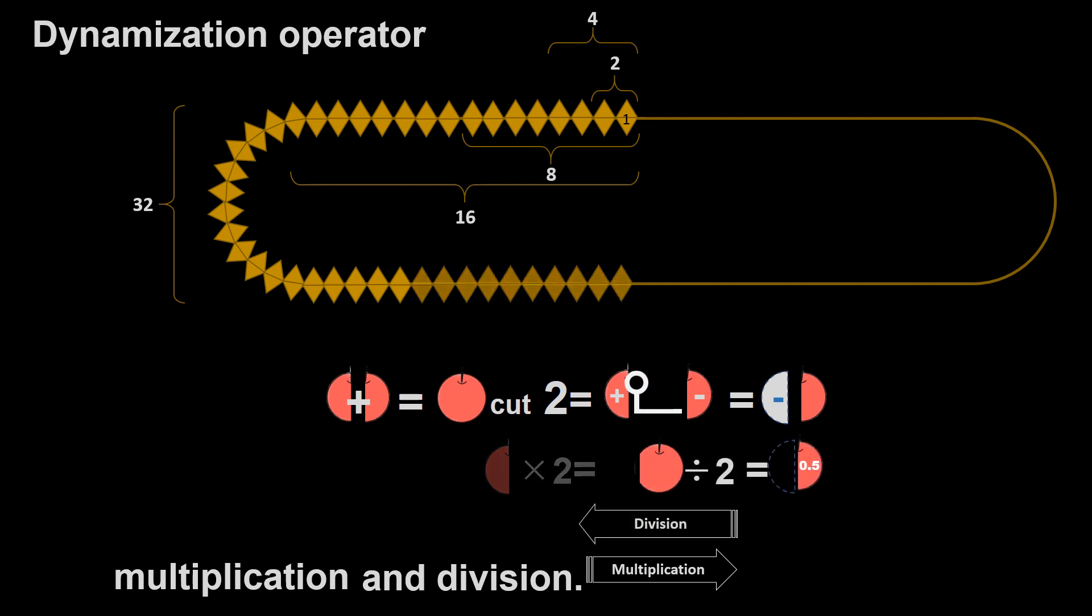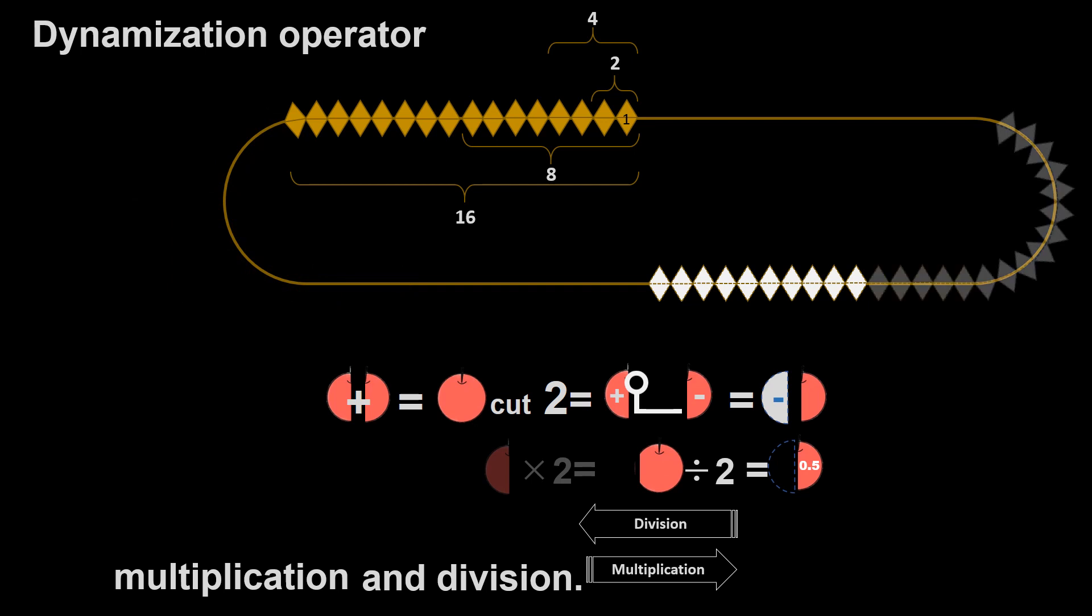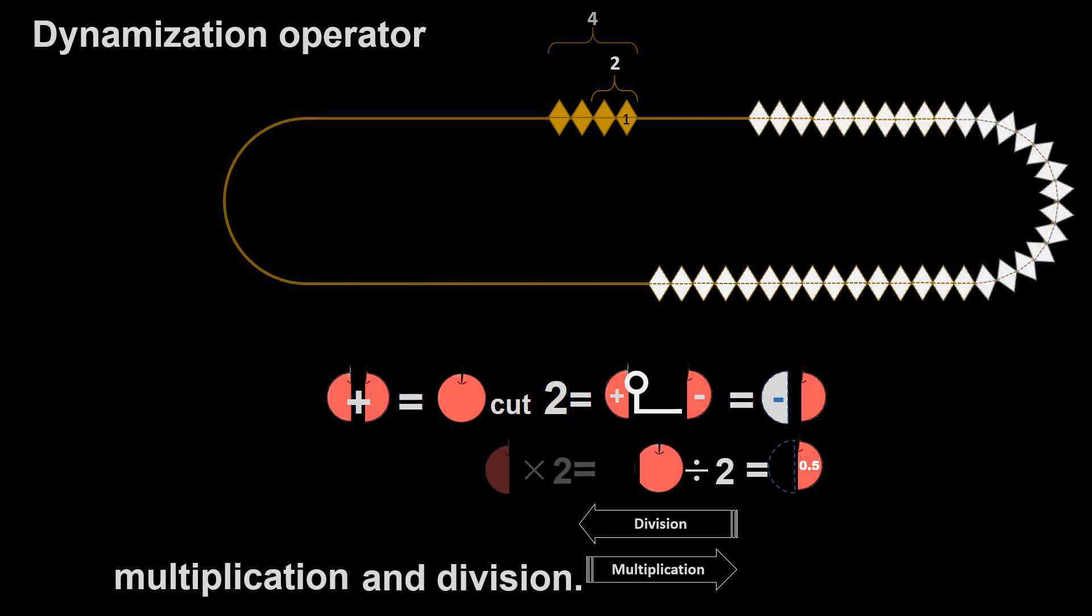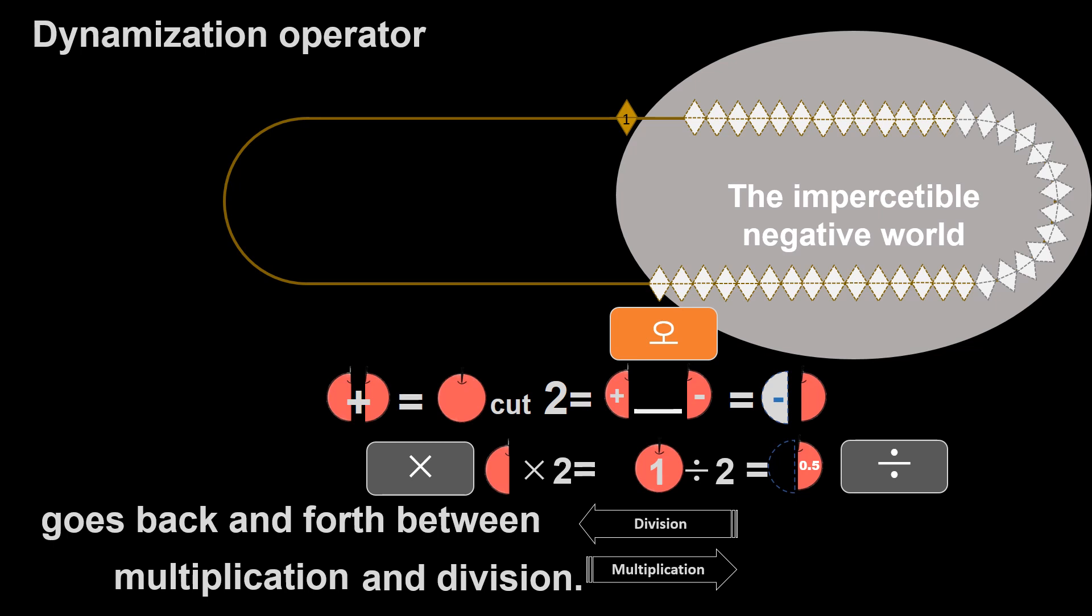Division. In division, the number of Satrakens increases as the Mitsuyoshi operator moves to the left. Dynamization operator goes back and forth between multiplication and division. The imperceptible negative world.